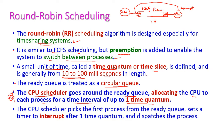The CPU scheduler picks the first process from the ready queue and sets the timer to interrupt after one time quantum. For one time quantum only, the first process will get executed in the CPU. Then immediately this particular process will go back to the ready queue — that is, the process is dispatched. This is called the round robin scheduling algorithm.